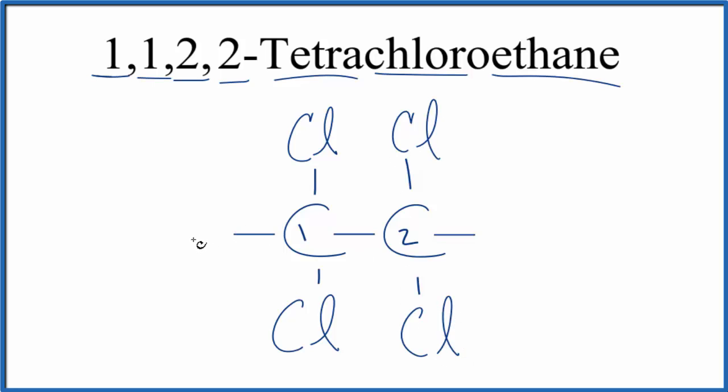These lines here go to hydrogen atoms. So this is the structural formula for 1,1,2,2-tetrachloroethane. If we wanted to look at a molecular model, that would look like this.